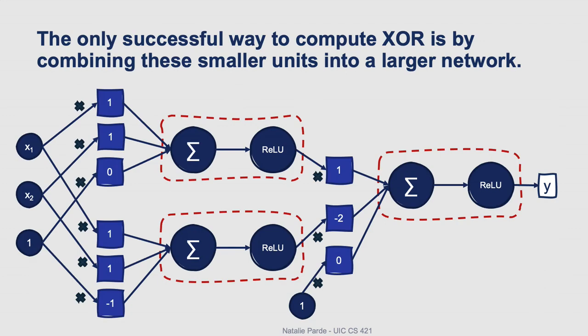So instead, if we want to implement the XOR function using our computational units, we need to combine them into a larger network, something like this, where we have a hidden layer with two units followed by an output layer with a single unit, and we're using nonlinear ReLU activations.